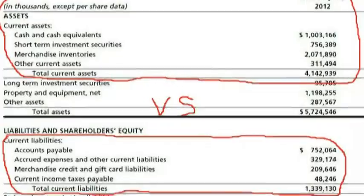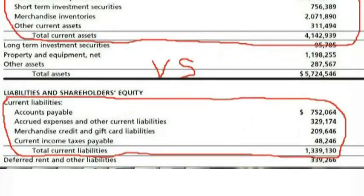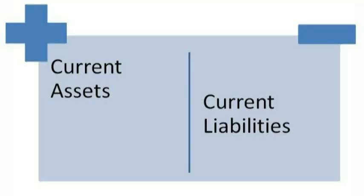In general, the more current assets a company has relative to its short-term liabilities, the more likely it would be able to pay off its short-term liabilities if they were to come due.